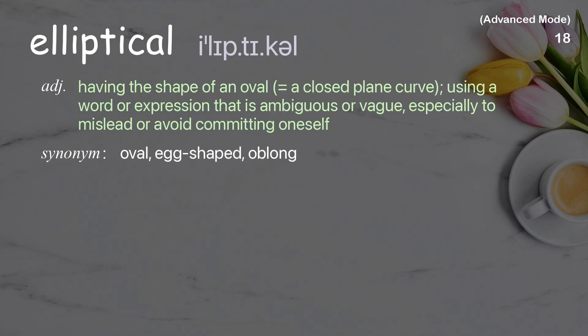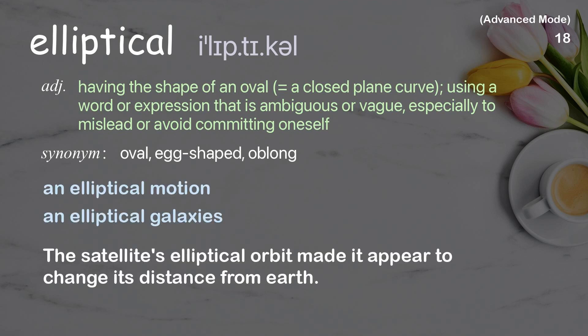Elliptical: having the shape of an oval — a closed plane curve; also, using a word or expression that is ambiguous or vague, especially to mislead or avoid committing oneself. Examples: an elliptical motion, elliptical galaxies. The satellite's elliptical orbit made it appear to change its distance from Earth.